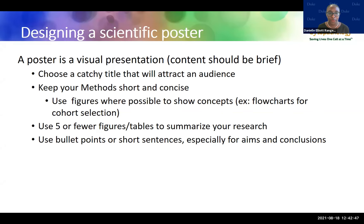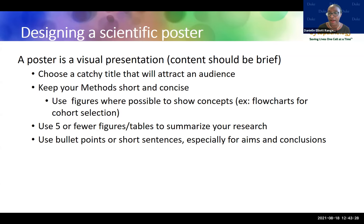Content, of course, is important but should be brief. Choose a catchy title that attracts your audience — you may pose it as a question or a provocative statement. Keep your methods short and concise. Use figures whenever possible to illustrate concepts; for example, a flow chart for cohort selection or subject exclusion. Most authors suggest limiting figures and tables to five or fewer, and use bullet points or short sentences rather than long paragraphs, particularly in your aims and conclusions.